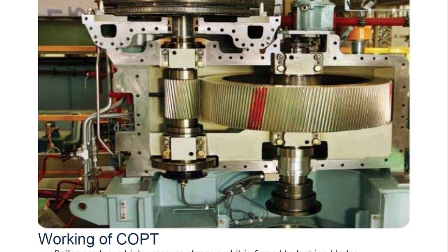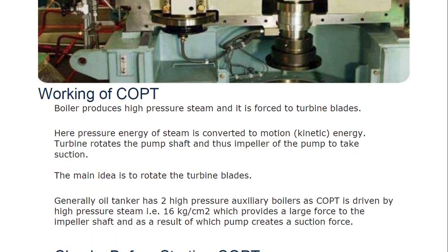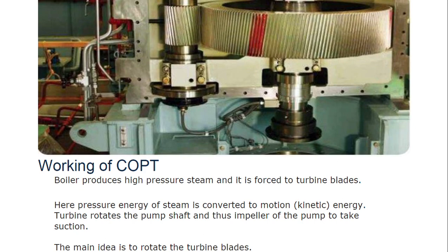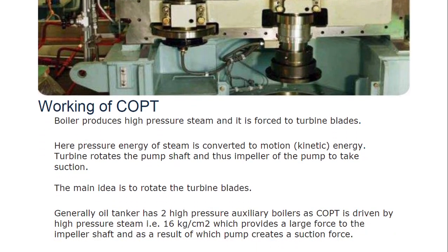Regarding the working of COPT: since COPT uses a high pressure turbine, it needs a high pressure boiler. The high pressure boiler produces high pressure steam which is forced onto the turbine blades. Here, the pressure energy of steam is converted to motion — kinetic energy. Just as in hydroelectric power generation, here steam is rotating the turbine, meaning pressure energy is converted to kinetic energy.